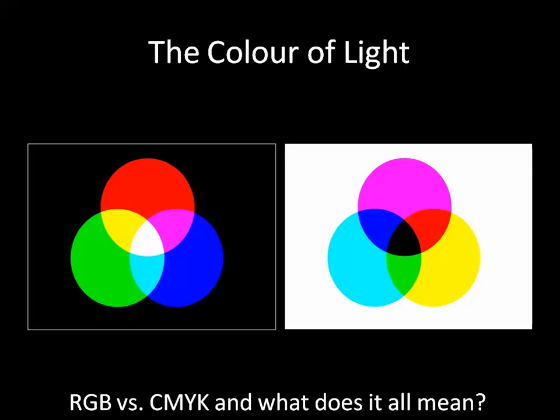A computer monitor, for example, is emissive, meaning it gives off light. If you start with nothing and add varying combinations of red, green, and blue, you end up with all the different colors possible. In a subtractive process, you begin with all colors, but since they're blended together you can't see them, and then you begin to filter out colors. The CMYK, or cyan, magenta, yellow, black color model, is used by computer inkjet printers, for example.